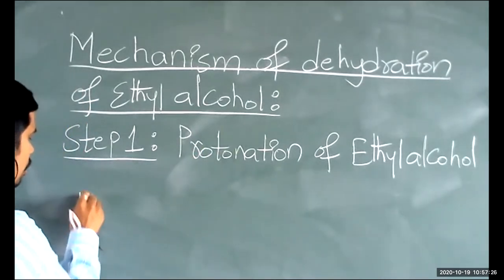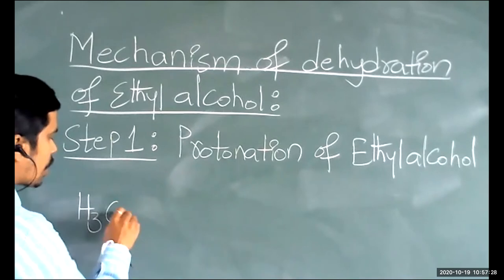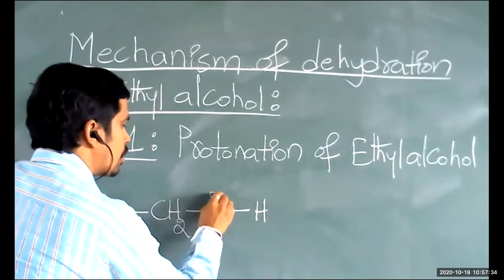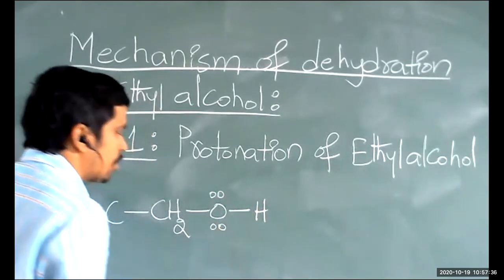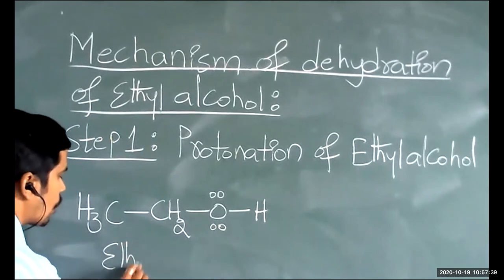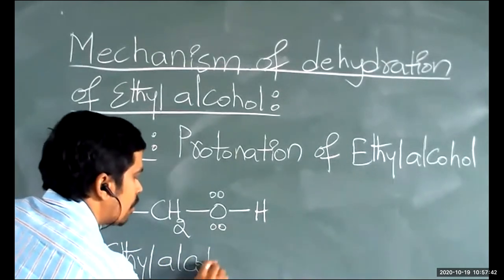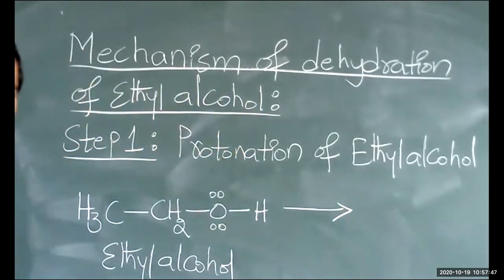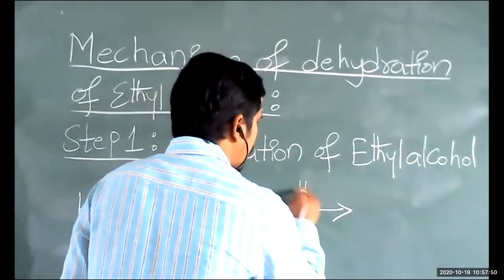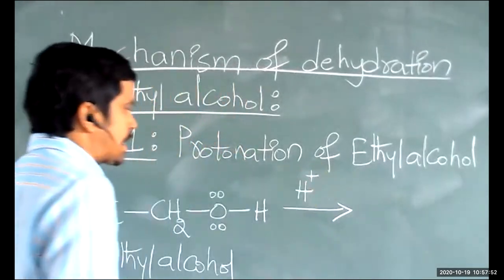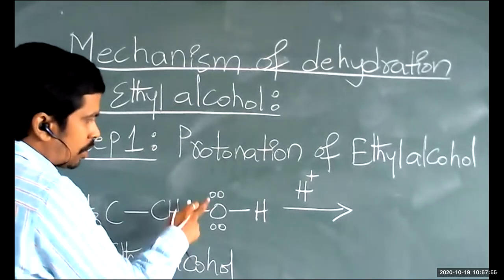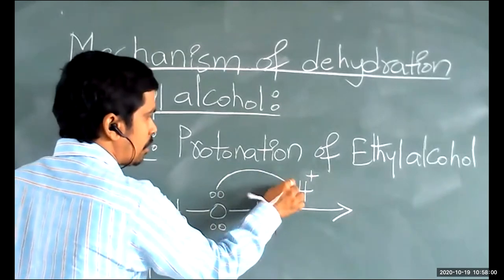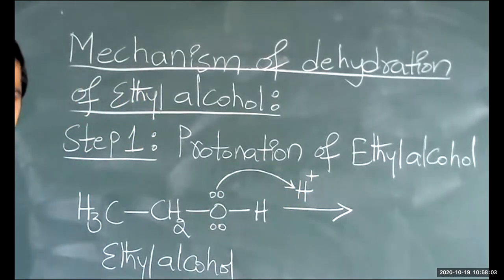I am taking ethyl alcohol: CH₃–CH₂–OH. Oxygen contains two lone pairs of electrons. This is the ethyl alcohol. When it is heated in the presence of concentrated H₂SO₄, H₂SO₄ is an acid that provides H⁺ ions. One of the lone pairs of oxygen is donated towards the H⁺ ion of concentrated H₂SO₄.